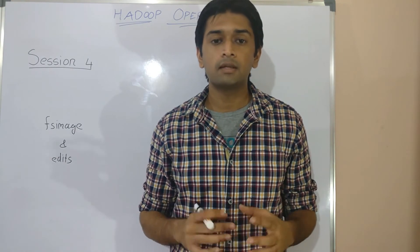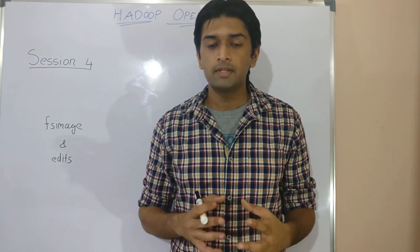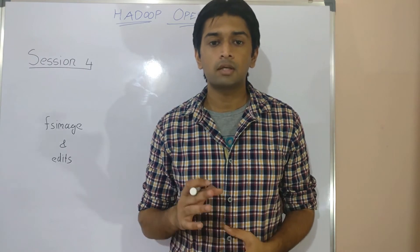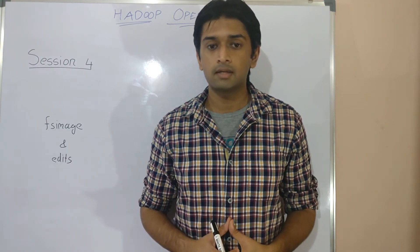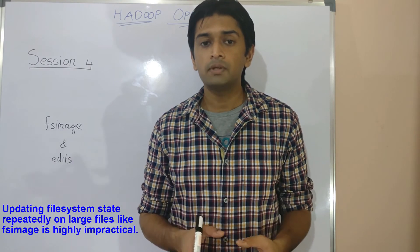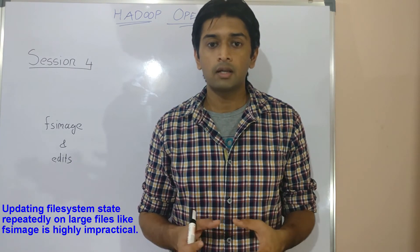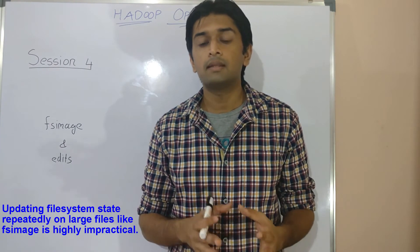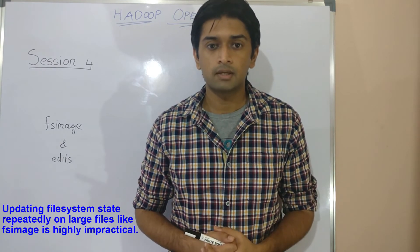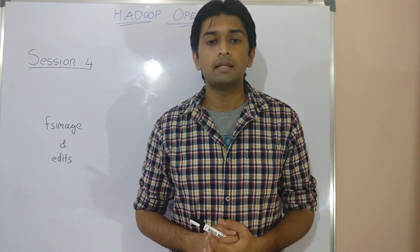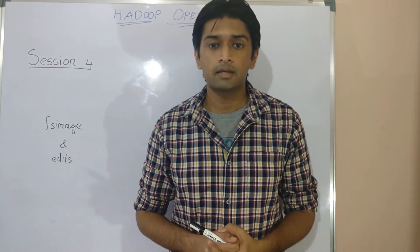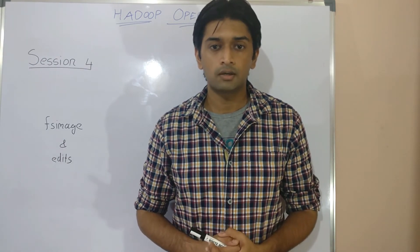Over time, fsimage can become a very large file. On a heavily utilized system there can be thousands of transactions every second, making it highly impractical to repeatedly open the large fsimage file, update the file system state, and then save and close it again — thousands of times every second. Apart from the obvious delays, repeatedly opening and closing a large file like fsimage can also lead to data corruption.